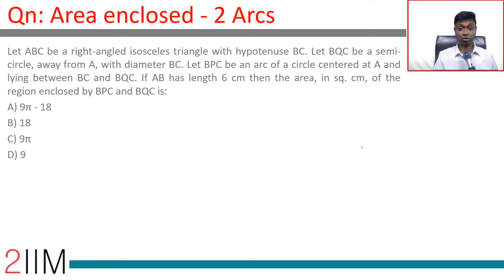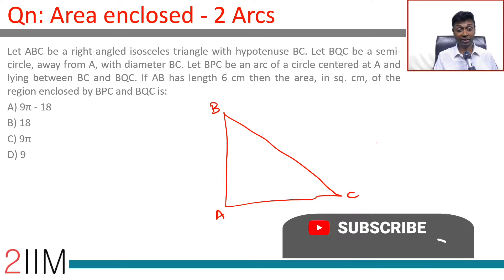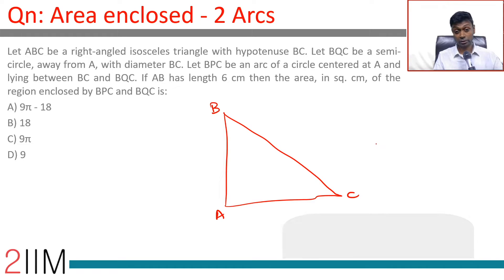Let A, B, C be a right-angled isosceles triangle with hypotenuse BC. So I am already liking this question. I like isosceles right-angled triangles. B, C, A. The sides are in the ratio of 1 is to 1 is to root 2, and the angles are 45, 45, 90.